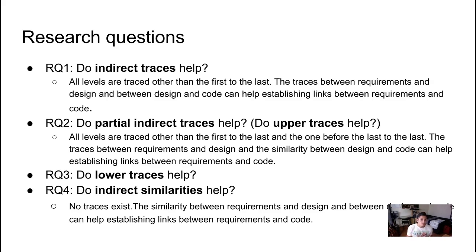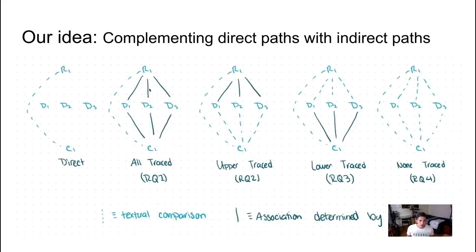The next question is, what if we only have parts of the system identified? If we go back a little bit here, we have both the requirements to designs and designs to classes traced, but what if we don't have that? What if our project isn't as developed? What if we only have requirements to designs or only have designs to classes, or what if we don't have anything traced at all? Does the indirect path actually help?